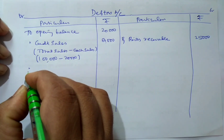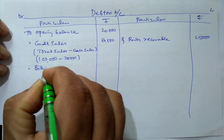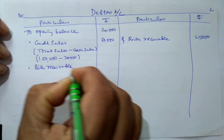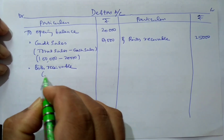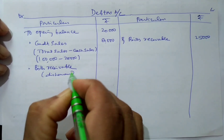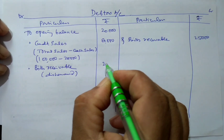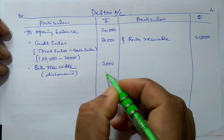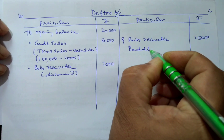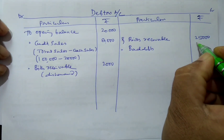And there is a bills dishonored during the year. When there is a dishonor of a bill, it must be written on the debit side — bills receivable dishonored: Rs. 2,000. And bad debts is given; I'll write bad debts: Rs. 3,000.